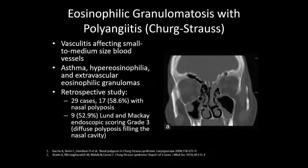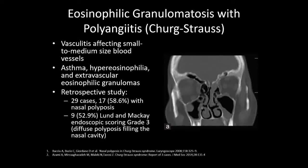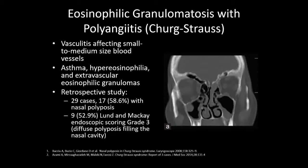Eosinophilic granulomatosis with polyangiitis, or Churg-Strauss, is a vasculitis affecting small to medium-sized blood vessels. The triad is asthma, hyper-eosinophilia, and extravascular eosinophilic granulomas. One retrospective study found that half of patients had nasal polyposis, and half of those had diffuse polyposis filling the nasal cavity. The polyps may precede asthma or vasculitis. Our patient has no systemic symptoms like flu-like symptoms or asthma, but this may be early in the disease course. Therefore, I don't necessarily favor Churg-Strauss. Granulomatosis with polyangiitis, also known as Wegener's granulomatosis, presents similarly but is much more destructive.